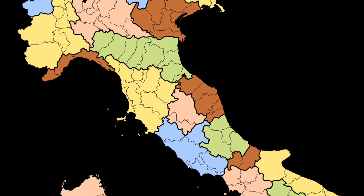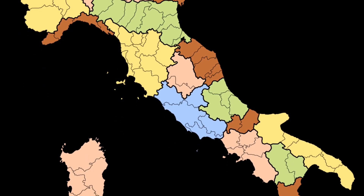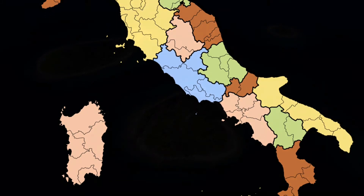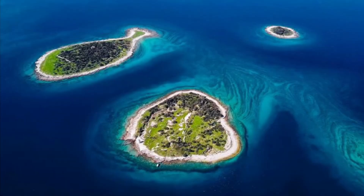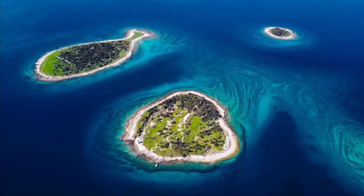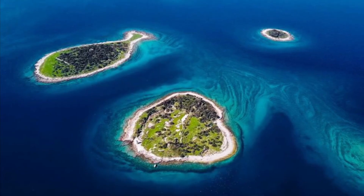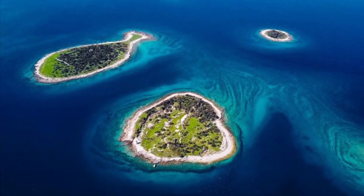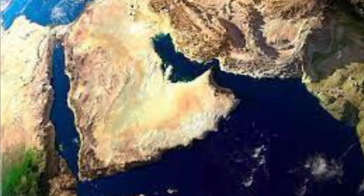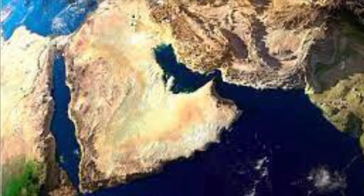A very good example of a peninsula is Italy, or most parts of Italy. Now it's time to really talk about the differences of both islands and peninsulas. Islands are completely surrounded by water, whereas peninsulas are almost surrounded by water.